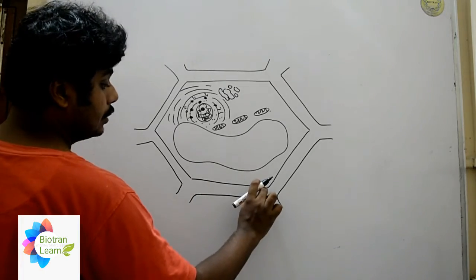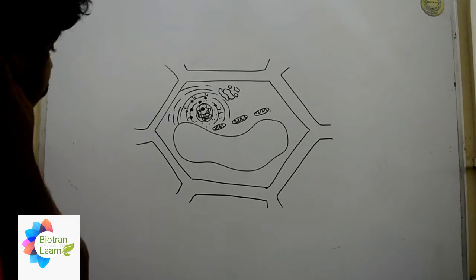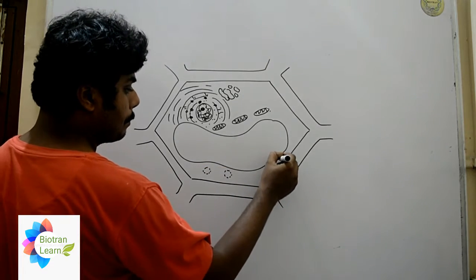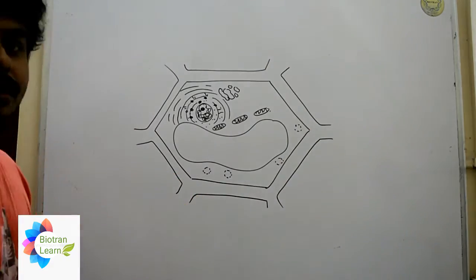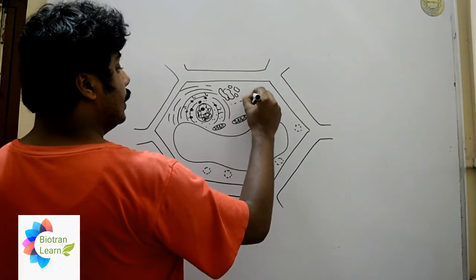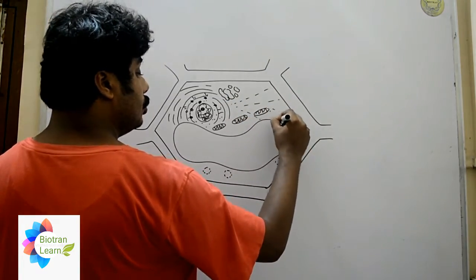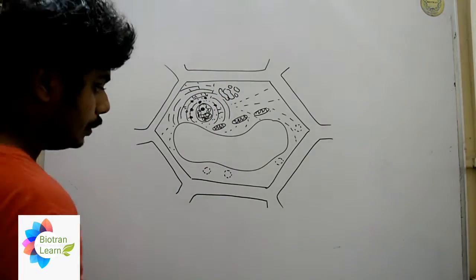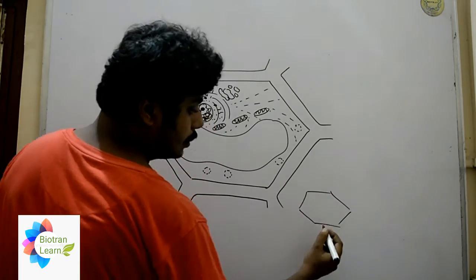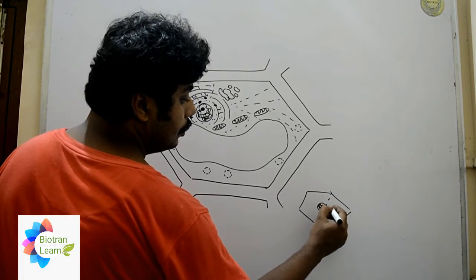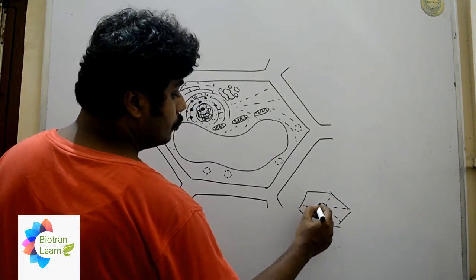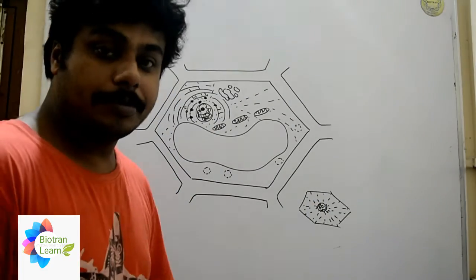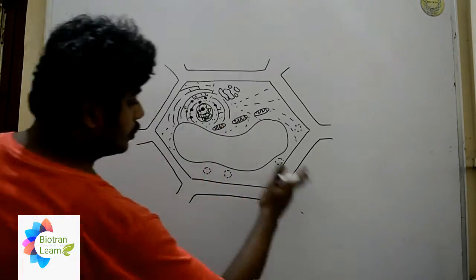The thicker section outside the cell membrane is known as the cell wall. We will also find certain lysosome structures. Afterwards we get certain microtubules, which help maintain the cell structure and come from the nucleus. These microtubules also help during the formation of spindle fibers, as plant cells do not have any centrosome.